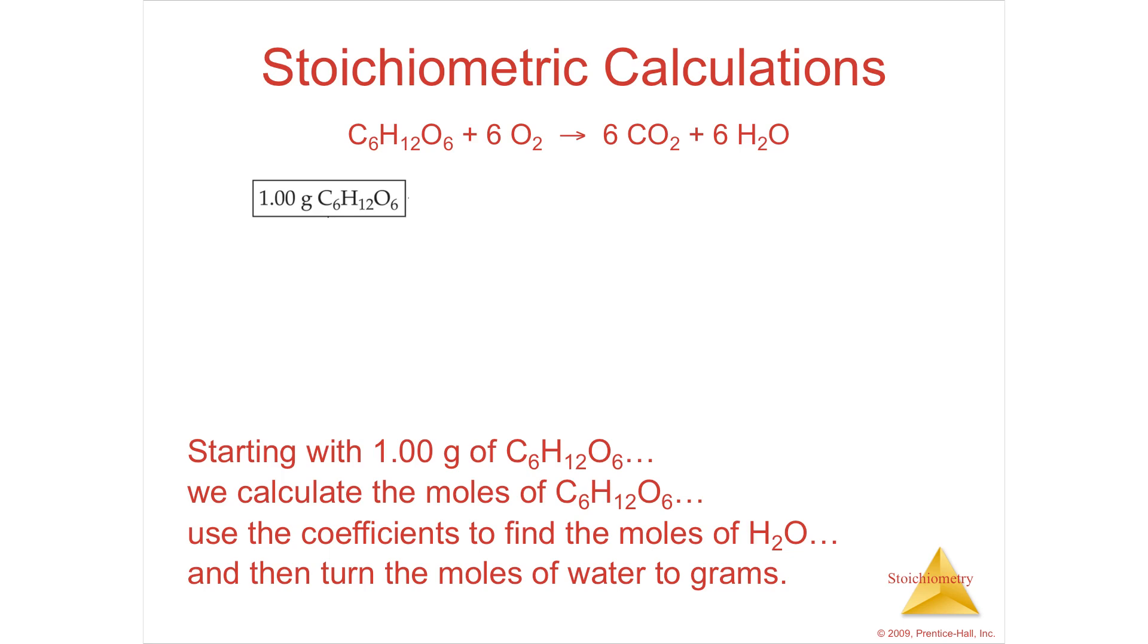They're going to say you have 1.00 grams of sugar. You're going to calculate the moles of sugar, and then turn it to moles of water to grams. I would say I'm going in with grams. I need to go to moles. And then once I'm in moles, I'm doing a 1 to 6 relationship. And then I'm going to find moles of water, and then go from moles of water to grams of water. That's how we're going to do it.